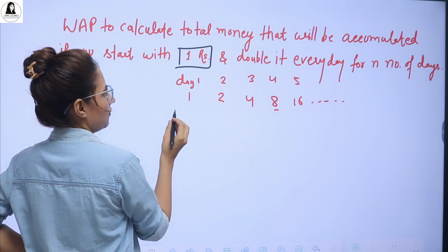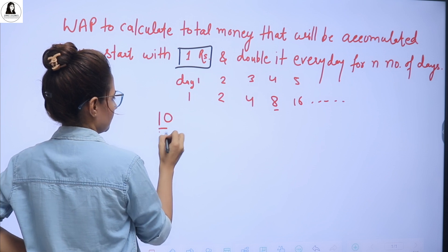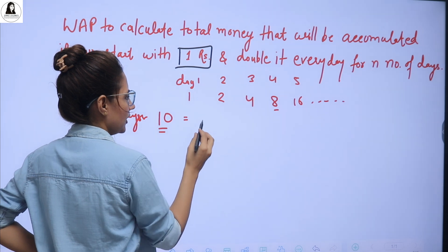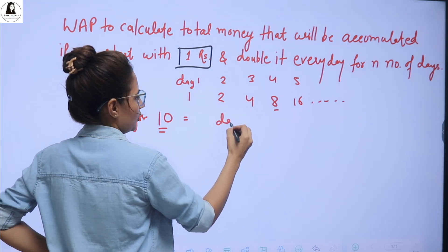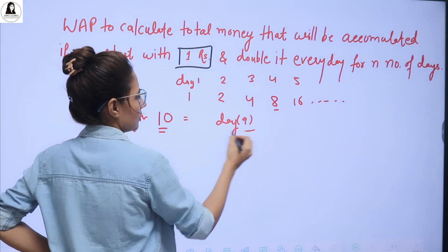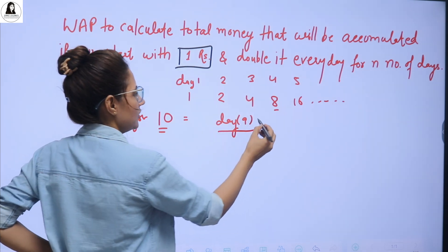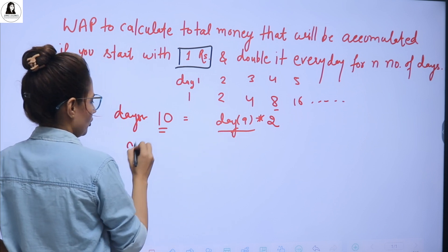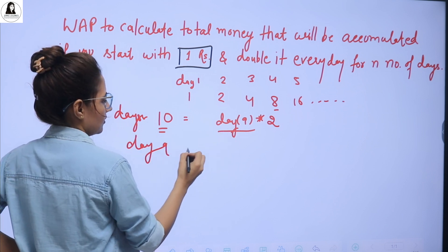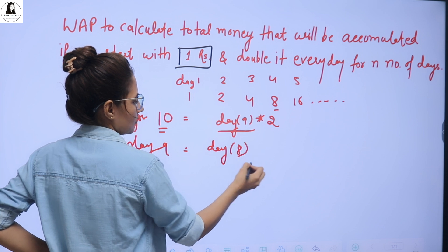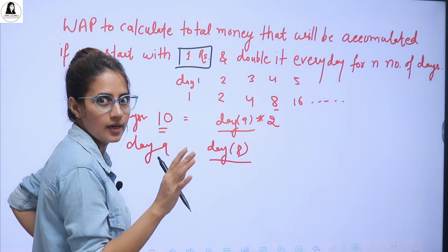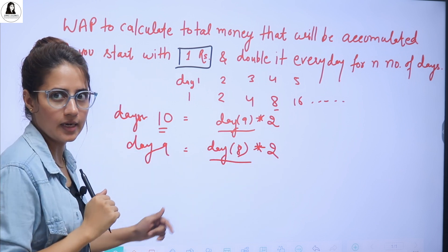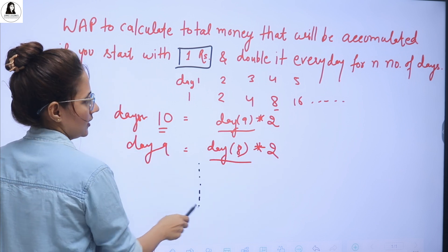So suppose after 10 days, after 10 days you want to find out. So if you have the money which is on day 9, if you have that money, you can simply multiply this by 2, right? To find out what money you will have at day 9, if you know the money that you will have on 8th day, after 8th day, if you have that thing, you can simply double it and you will get whatever the money at day 9, right? So try to think something like this.